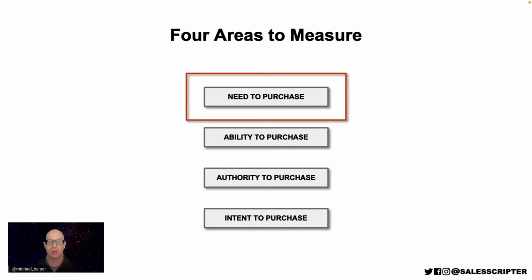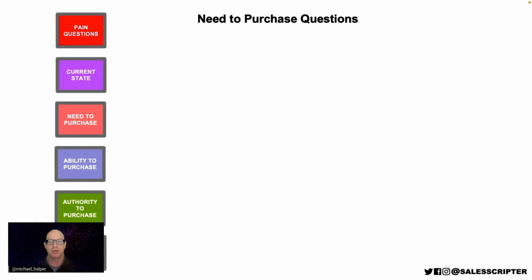Let's go through these one at a time, starting with the need to purchase. The need to purchase refers to whether the prospect actually needs what you sell or merely wants it. You may have a conversation with a prospect who loves what you sell — really innovative features and cool things — and the prospect may love it, but does the prospect need it? If they need it, you can prioritize it more and treat them as a more qualified prospect.